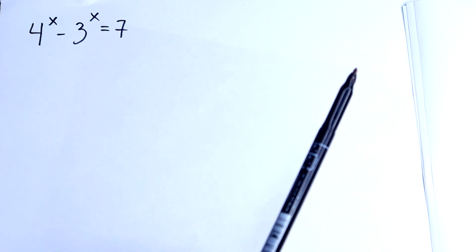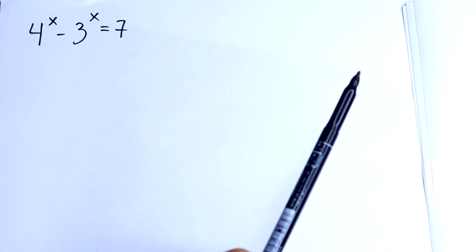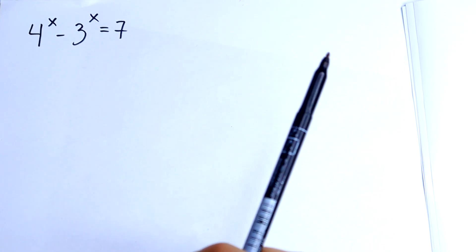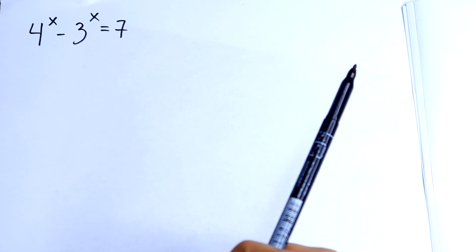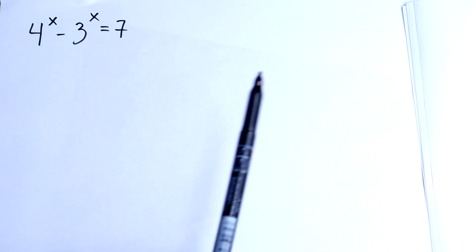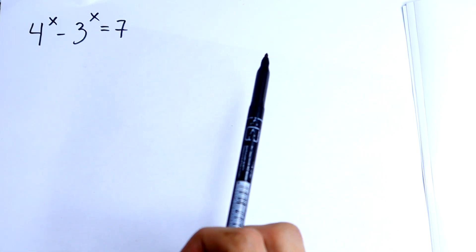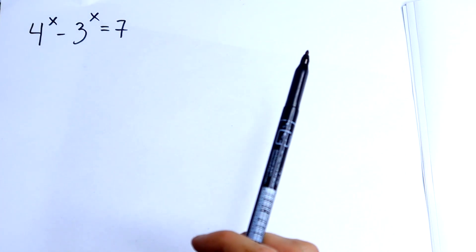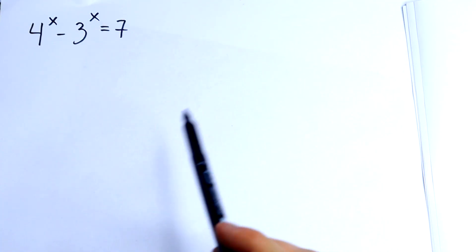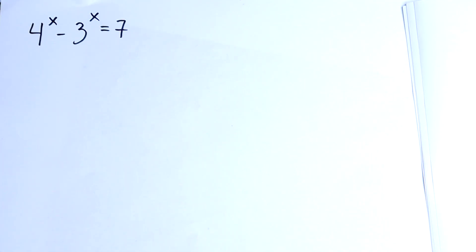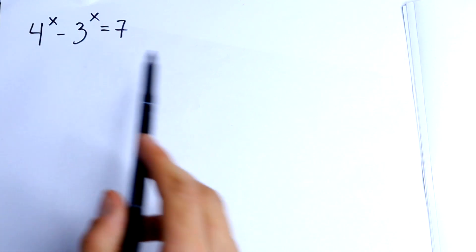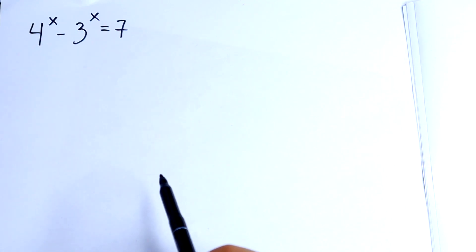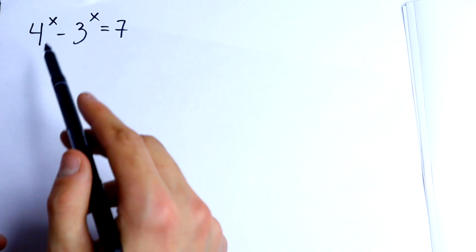I feel you — you feel an answer, you know an answer, but what about the solution? Because we need to write a solution on our paper. I think you feel the answer, but let's try to check it. The main idea to solve this type of exponential equation is to divide both sides by one value.